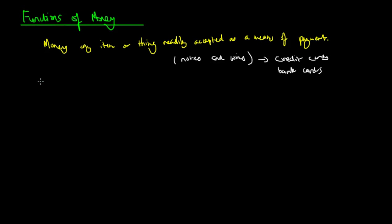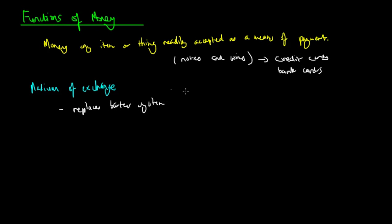The first function of money is that it is a medium of exchange. Money is an object generally accepted in exchange for goods and services. So instead of this barter system, it replaces the barter system, which required this double coincidence of wants, and actually made this exchange or marketplace more effective.